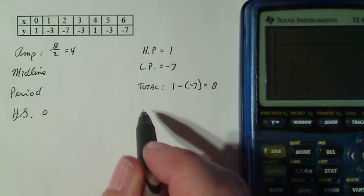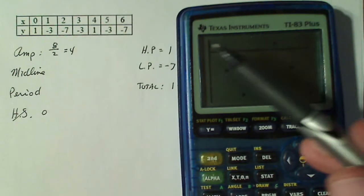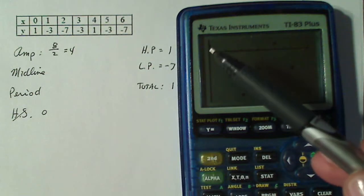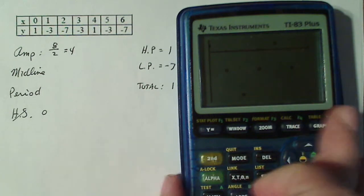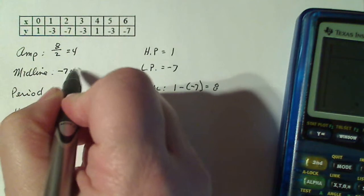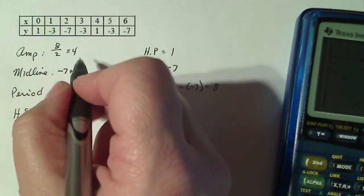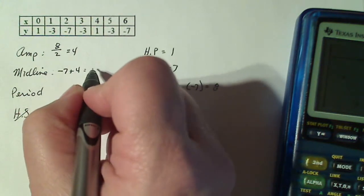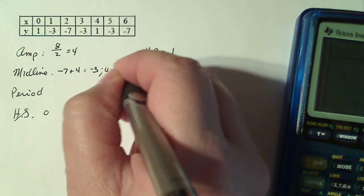Now my midline occurs halfway between the high and low point. So that means four units. So my amplitude is four, four units down from the high or four units up from the low is where my midpoint is going to be. So my low point is minus seven. I'm going to add four to that. So my midline looks like it's at minus seven plus four is negative three. So my midline occurs at y equals negative three.